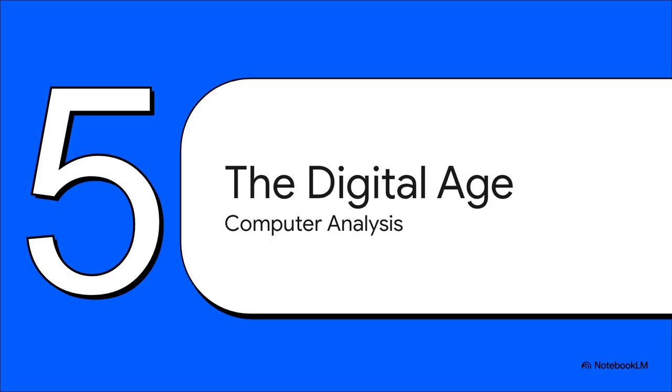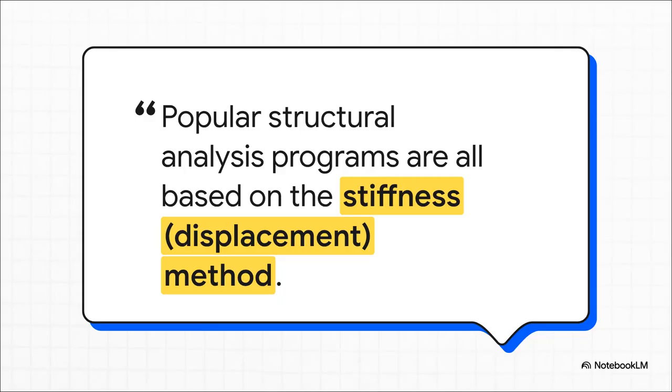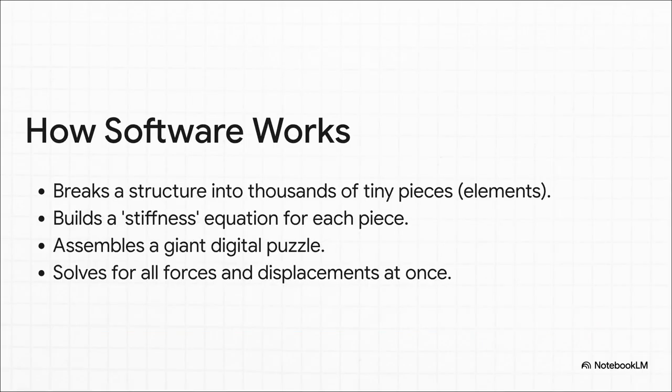So, you might be thinking, this is all fascinating history, but how do these fundamental ideas actually power the tools that build our modern world? Well, it turns out that second idea, the displacement method, or stiffness method, that became the absolute engine of the digital revolution in engineering. It is the core concept behind pretty much every single piece of structural analysis software used today. So, how does this software actually work? It's pretty cool. It takes a huge, complex structure, a skyscraper, a bridge, and it digitally chops it up into thousands, sometimes millions, of tiny, simple pieces. These are called elements. Then, it uses that stiffness method to build a gigantic system of equations describing how every single one of those tiny pieces is connected. It creates this enormous digital puzzle. And then the computer just solves it all at once, finding all the forces and all the movements in a matter of seconds.